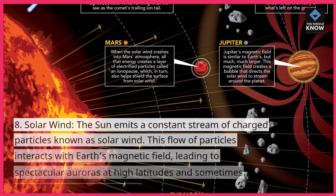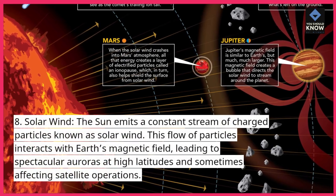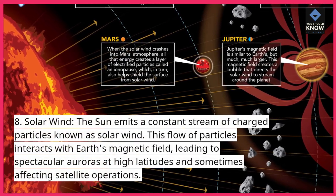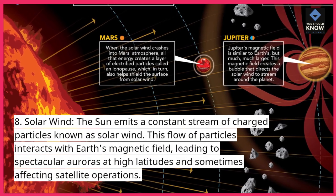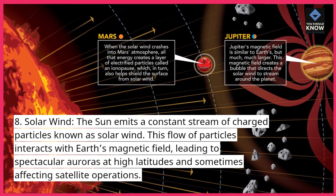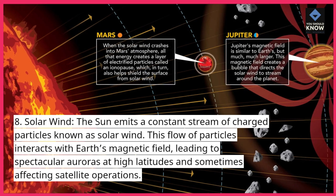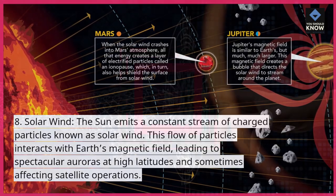Solar wind: the sun emits a constant stream of charged particles known as solar wind. This flow of particles interacts with Earth's magnetic field, leading to spectacular auroras at high latitudes and sometimes affecting satellite operations.